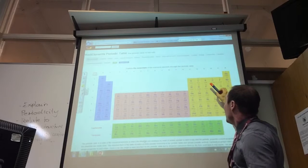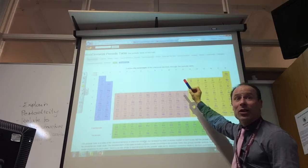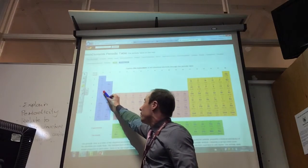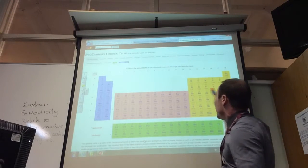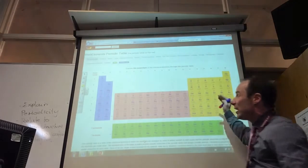So, phosphorus, sulfur, chlorine, and argon are all non-metals as you go across. And you see that you go from metals to non-metals always as you go across the periodic table. And we're going to be focusing on period 3.